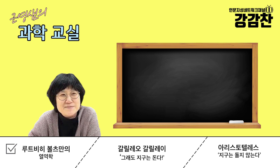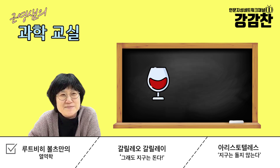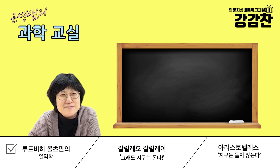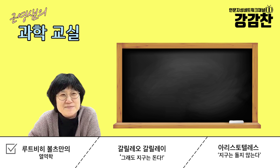대표적인 예로 '깨진다'라는 동사가 있다고 해봐요. 뭔가가 깨지면, 처음에 컵이 있다가 조각이 난 거잖아요. 우리는 이 물질이 이렇게 되면 깨졌다고 얘기하죠. 그 '깨진다'라는 동사적 사건은 컵과 조각 사이에 있는 거예요. 동사 자체는 명사와 다르게 이해해야 합니다. 물질로 본다는 건 명사로 보는 거고, 동사로 본다는 건 실체적으로 물질적으로 포착될 수 없어요.